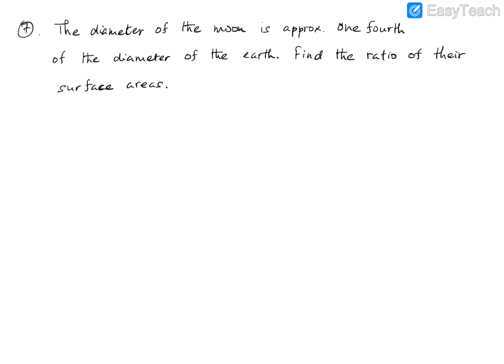The first thing we notice here is that the moon and the earth are in the shape of a sphere. So we are going to calculate the surface areas of the spheres. The radius values are not given to us. The only information given is that the diameter of the moon is one-fourth the diameter of the earth.